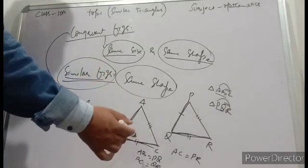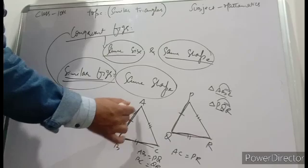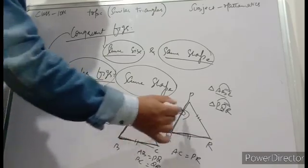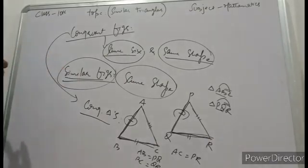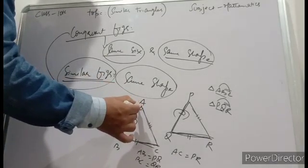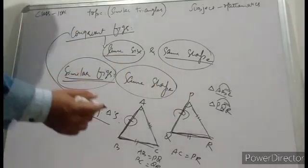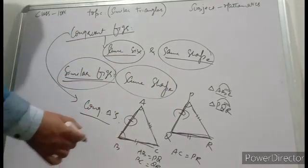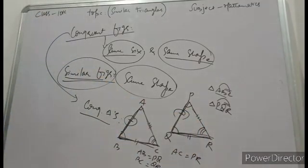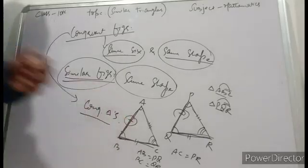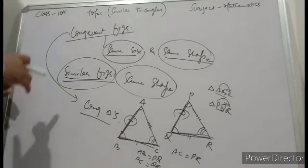The sides of one triangle are equal to the corresponding sides of the other triangle. Two triangles are congruent. The second thing is triangle ABC: angle A, angle B, angle C. Triangle PQR: angle P, angle Q, angle R. So two triangles are said to be congruent if the sides and angles of one triangle are respectively equal to the corresponding sides and angles of the other triangle.